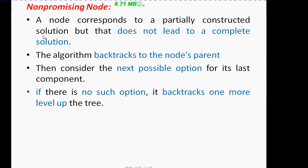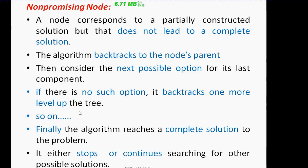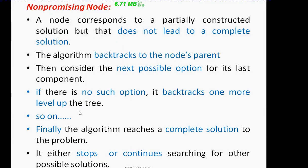After backtracking to the grandparent, we again check if there is any other option to continue towards the solution. If we find the next option, we continue towards the leaves; otherwise, we backtrack one more level up. This process continues until the algorithm reaches the end — either it gives a complete solution or a dead end. If it is a dead end we stop; if there is a solution, we can stop or continue searching for more solutions.